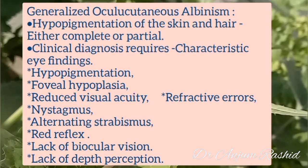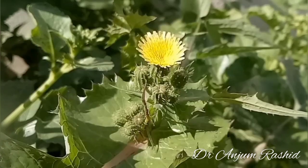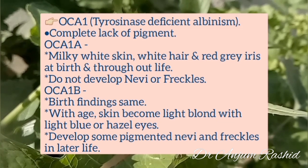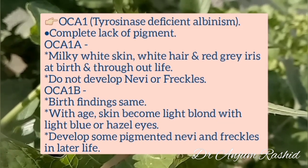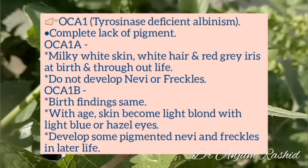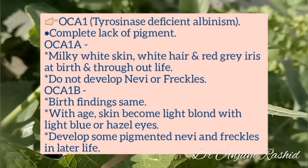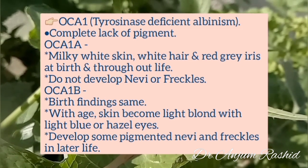Oculocutaneous albinism type 1, also known as tyrosine-deficient albinism. In type 1a there is a complete lack of pigment: milky white skin, white hair, and red-gray iris at birth and throughout life.